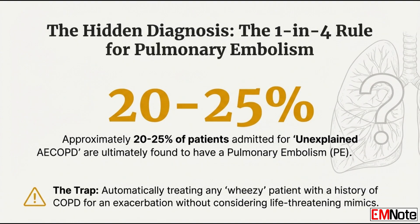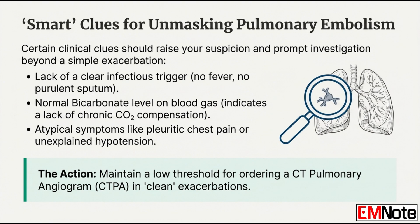Avoiding harm starts with the right diagnosis. The one critical, life-threatening mimic that often gets missed is pulmonary embolism — PE — and it is terrifyingly common. Data shows PE is found in about 20 to 25% of patients first diagnosed with an unexplained AECOPD — that's one in four. To spot it, look for the 'clean exacerbation': a typical AECOPD is infectious, with fever and purulent green or yellow sputum. The clean exacerbation lacks that infectious trigger — the patient is short of breath but has no fever and is producing clear, non-purulent sputum. That's your first big red flag for PE.